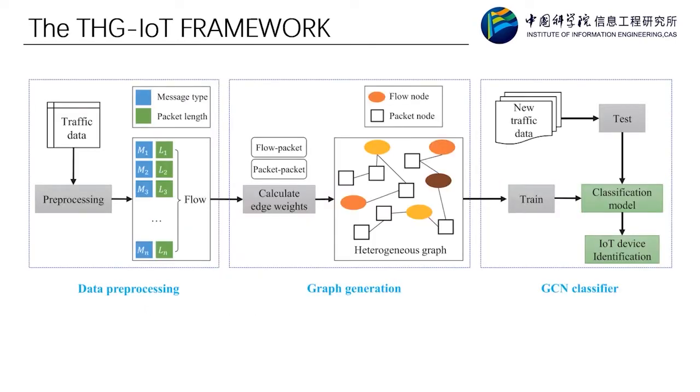And thus, it does not require selecting features exactly by hand. Then, what is the THG-IoT framework? THG-IoT is mainly composed of three modules as shown in the figure. It uses message type and packet length to differentiate the characterization of different classes of flows, and further enhances the characterization capabilities by establishing heterogeneous graphs between flows and packets. Our method enjoys the advantage of both supervised learning and unsupervised learning. I will introduce each module in detail.